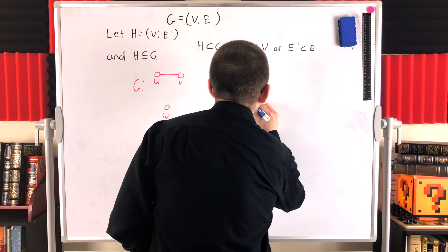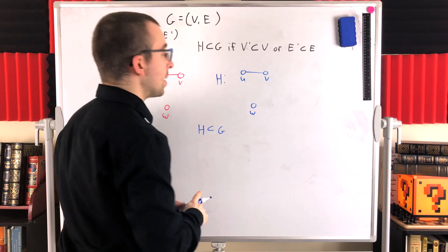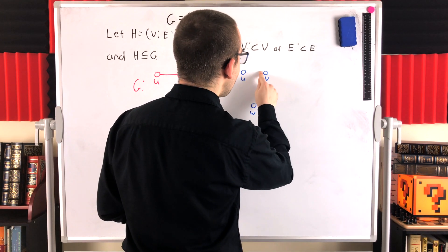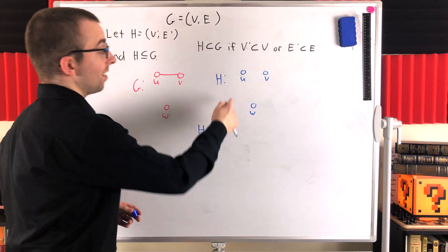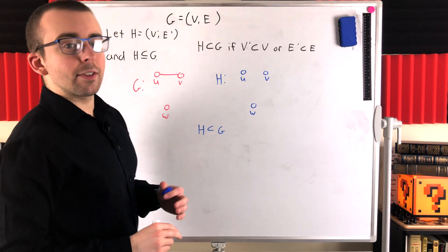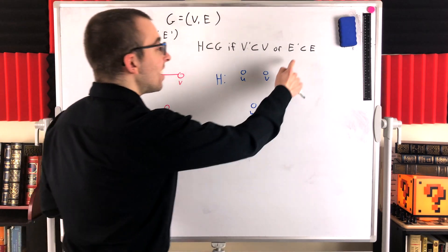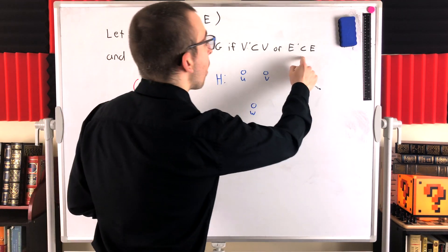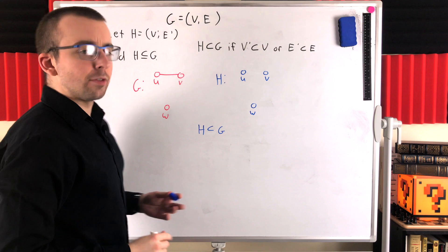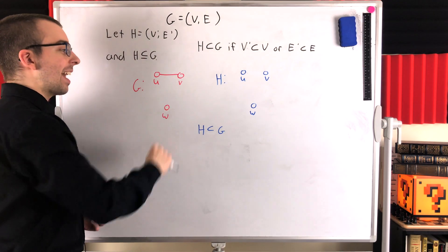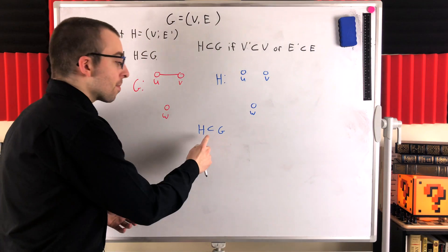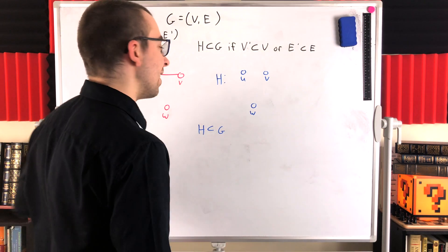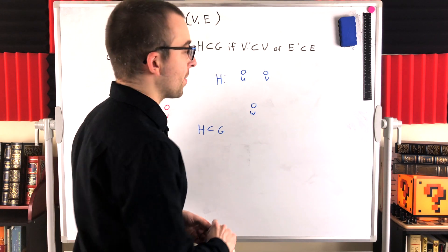We could look at a slightly different situation if we add that vertex W back in and then get rid of the edge joining U and V. In this case, again, H is a subgraph of G and the edge set of H is a proper subset of the edge set of G since G has this edge UV which H does not. So, H, again, is a proper subgraph of G. It's a subgraph of G that isn't equal to G. That's all there is to it.